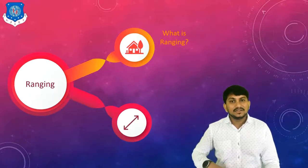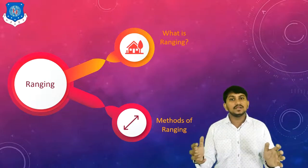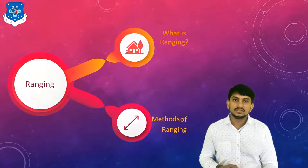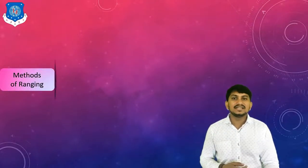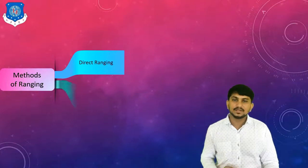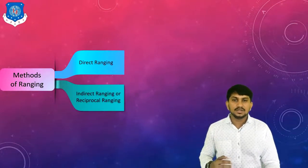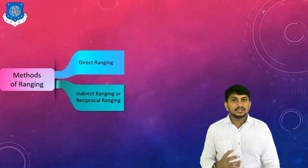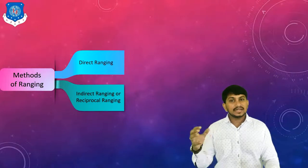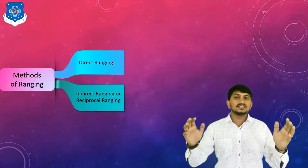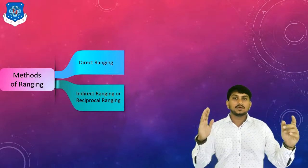Let's discuss the methods of ranging. It is basically divided into two types: direct ranging and indirect or reciprocal ranging. Direct ranging is possible when the stations are inter-visible. Indirect ranging is used when the stations are not inter-visible — meaning you cannot see the next station from the first station.